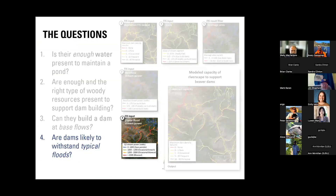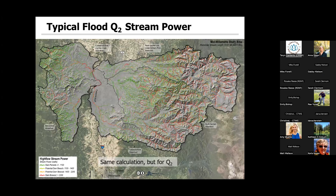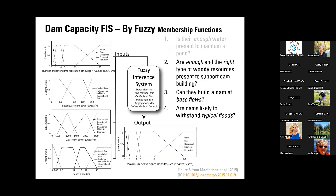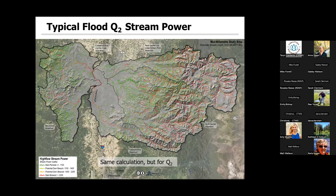We also look at whether dams can likely withstand a typical flood. For that, we use Q2, which is a two-year recurrence flood interval, using the same stream power equation. The outputs are more interesting: reds show areas that could blow out — areas where if a dam was built, the model says it would blow out. 'Potential blowout,' 'potential breach,' and greens are areas where the dam would persist.